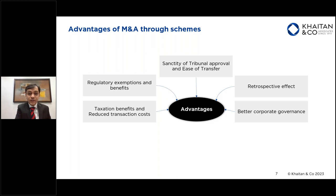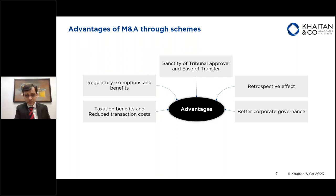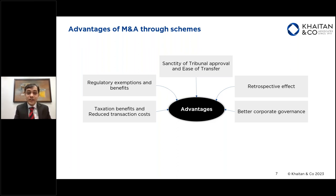Since a scheme requires approval of the tribunal and other regulators, there is a sanctity of a court order confirming a transaction, providing legal validity. You don't need to do any other agreements to transfer a business. Contracts in one entity can be novated without any separate document; immovable properties can be transferred without executing any conveyance deed; and if there are any licenses or approvals required to conduct a regulated business, those can be transferred based on the court order through a deeming provision in the scheme.